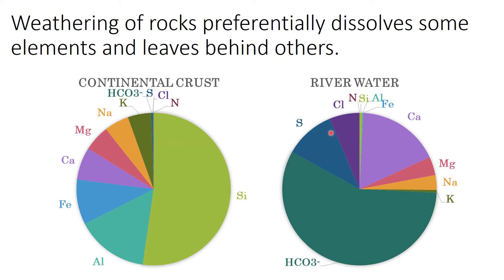We can see that silicon is very abundant in continental crust but forms a very small component of river water, whereas elements like calcium seem to be much more concentrated in river water than they are in the continental crust. You might want to think about why some elements preferentially dissolve into river water and others do not, and where those other elements get left behind — if the silicon isn't making it into the ocean, where does it end up?